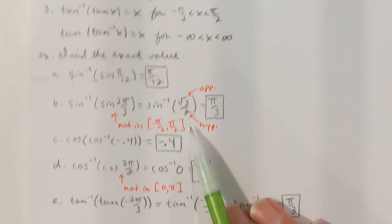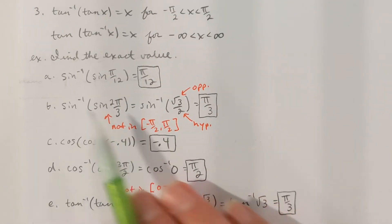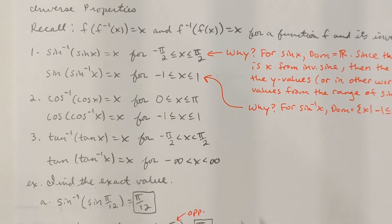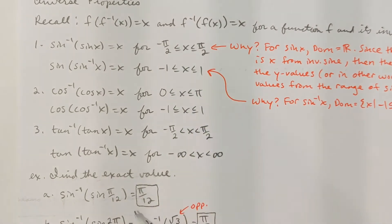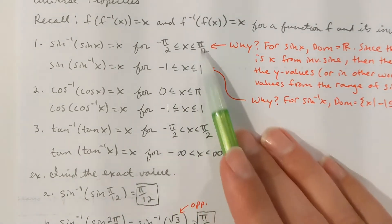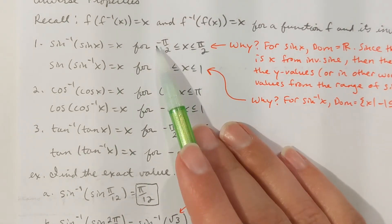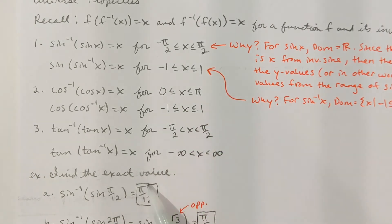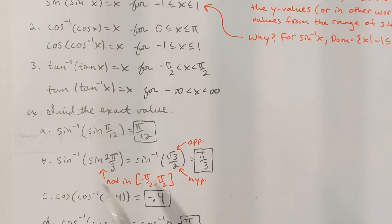Let's use this information to find some values. If I want to find sine inverse of sine of pi over 12, that's going to be pi over 12, because pi over 12 is between negative pi over two and pi over two. So that's just a go-right-to-the-answer type deal.